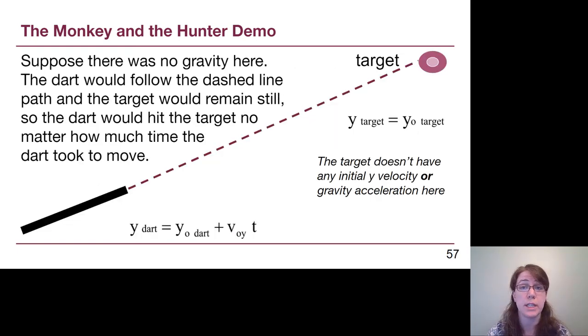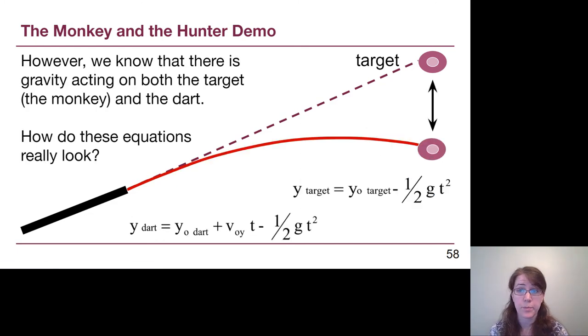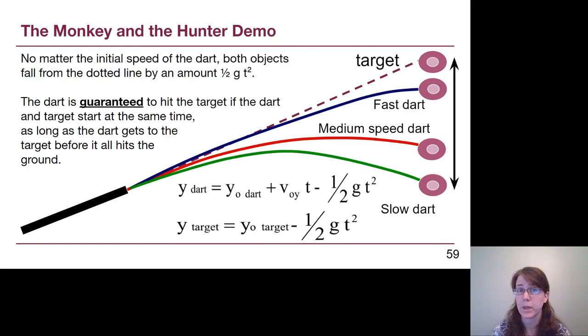Let's think about why that is. Let's put ourselves in a situation where there just isn't any gravity. If that monkey let go of the branch, then he wouldn't drop anywhere and the hunter aiming directly at the monkey was the right thing to do. The dart's going to follow the dashed line directly to the target and hit it. If we add in gravity, then the dart will fall with an added term of one-half g t squared and the monkey will fall with an added term of one-half g t squared. No matter how long it takes for the dart to reach the monkey as the monkey's falling, they will hit each other at the same spot because gravity's acting on them both in the same way. So no matter how fast or slow the dart is, as long as it gets to the monkey before the monkey hits the ground, it will hit the target.